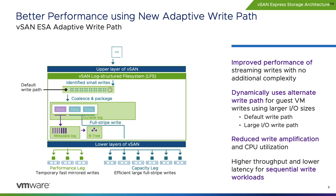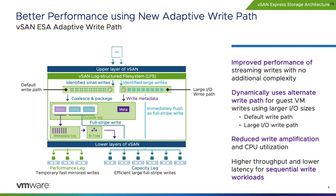The ESA in vSAN 8 Update 1 introduces a new adaptive write path that allows workloads using a large amount of writes, or highly sequential writes, to write the data in an alternate, optimized way. For each object that a VM writes to, the ESA will evaluate the characteristics of the writes and use its default write path or large I/O write path accordingly. This adaptive write path will help streaming write workloads achieve higher throughput and lower latency, while also driving down write amplification and CPU utilization.